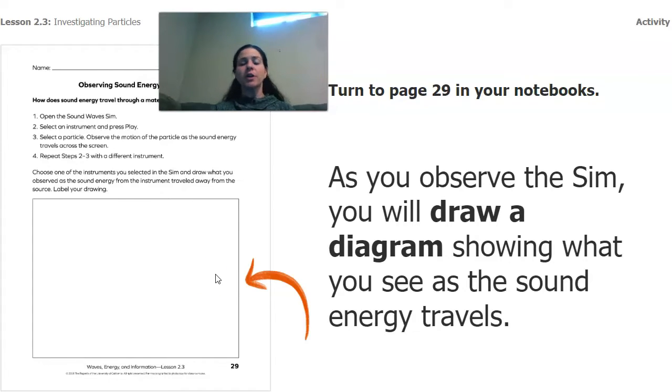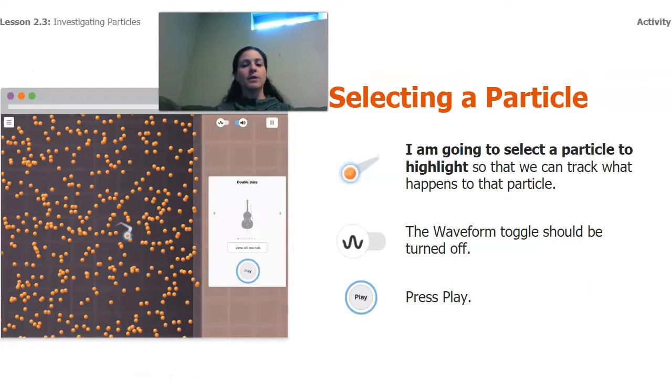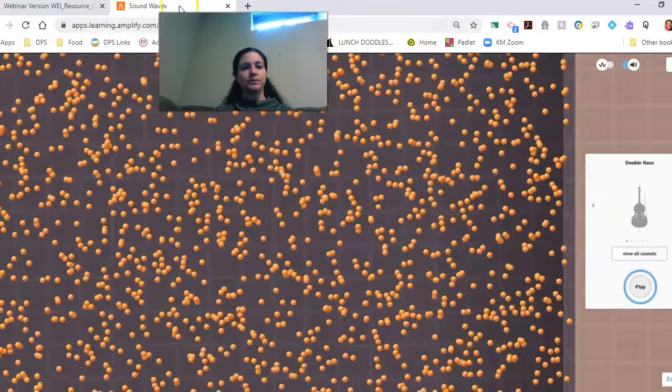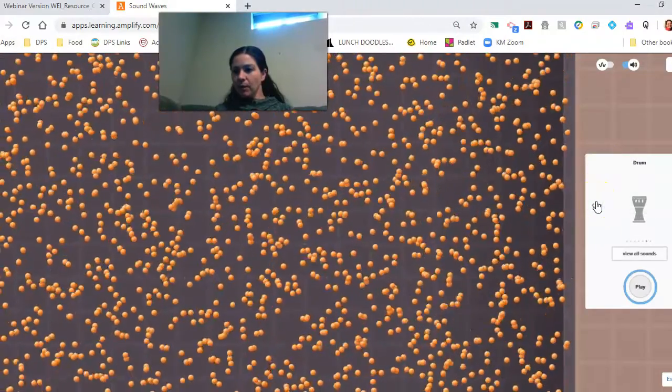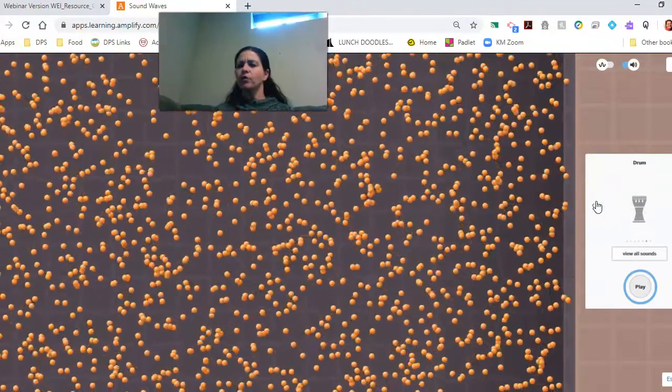Now again, if you have your student notebook, great, you can turn to page 29. If you don't have your notebook, that's fine too. Just grab a piece of paper and a pencil or a pen, and we're going to draw a diagram of what we're seeing when the sound is traveling.